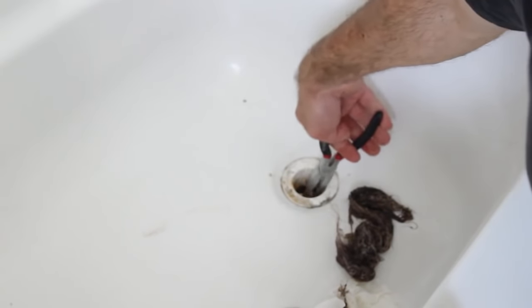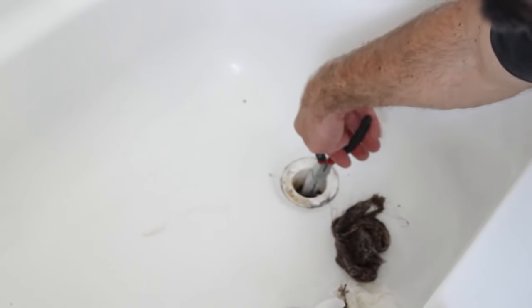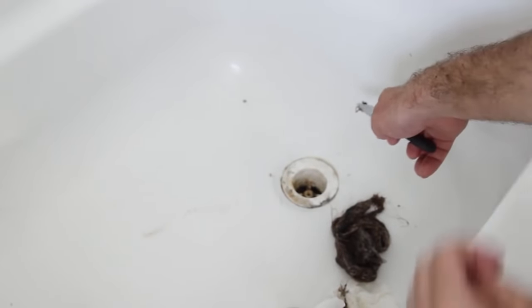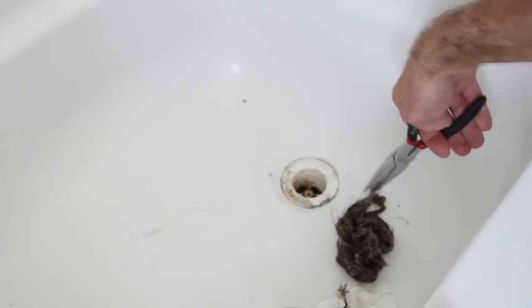All right. So all this hair was down in where this tub shoe is, and the tub shoe runs to the front of the bathtub and then down into a P-trap or a drum trap. Hopefully though, it doesn't make it that far. You can just yank it out.